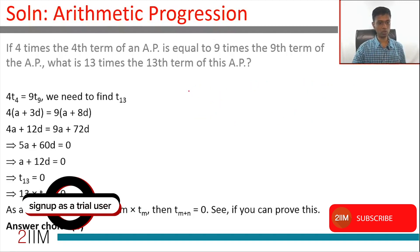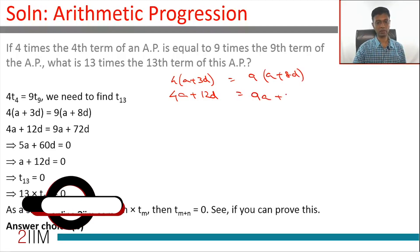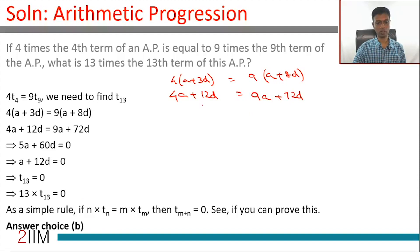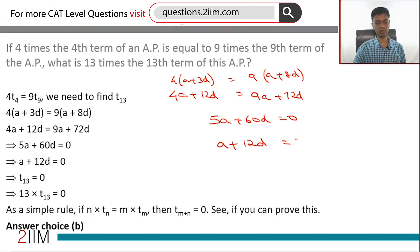4 times T4 is 4 times A plus 3D, 4A plus 12D, this is 4 times A plus 3D equals 9 times A plus 8D or this is 9A plus 72D. If we simplify this, 5A plus 60D equal to 0 or A plus 12D equal to 0.